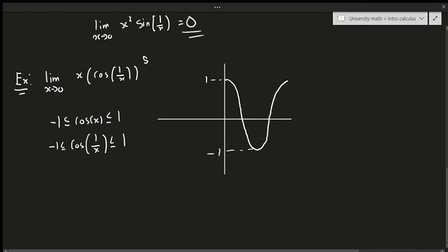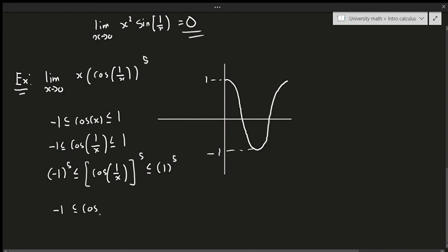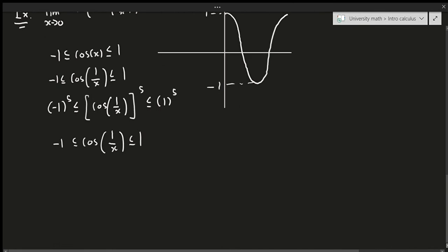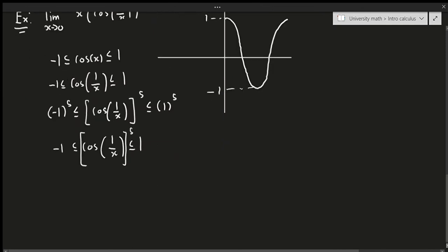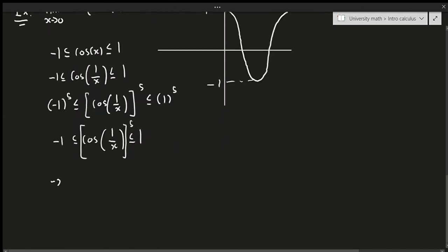Next, we raise all parts to the power of 5: (−1)⁵ ≤ cos(1/x)⁵ ≤ 1⁵, which simplifies to −1 ≤ cos(1/x)⁵ ≤ 1. Then we multiply all sides by x, giving: −x ≤ x·cos(1/x)⁵ ≤ x.